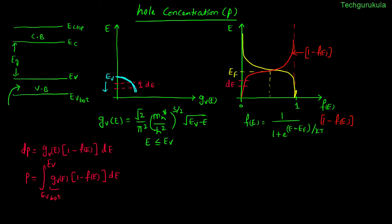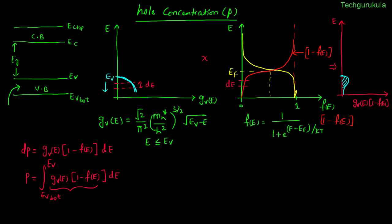If we multiply the two functions gV(E) and (1 − F(E)) from their respective graphs, the resultant curve, plotted with E on the y-axis and gV(E) × (1 − F(E)) on the x-axis, shows that above EV the value of gV(E) is 0, so the product is also 0. At EV the value is 0, and as we go below EV the product keeps increasing. Going further below, the (1 − F(E)) term dominates and drives the value back to 0. The area under this curve is the total hole concentration we are looking for.